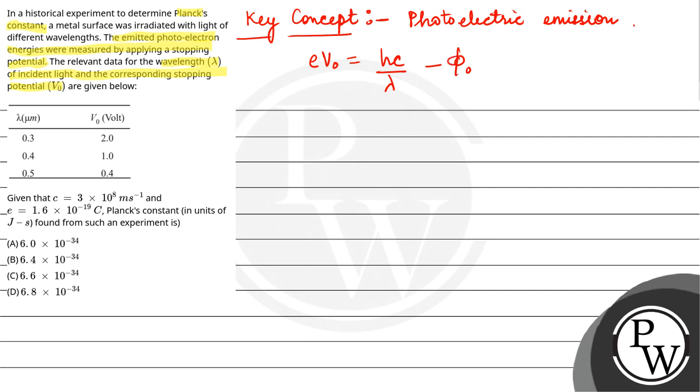φ₀ is the work function, h is Planck's constant, c is the speed of light, λ is the wavelength of incident radiation, and V₀ is stopping potential. e is the charge on electron.